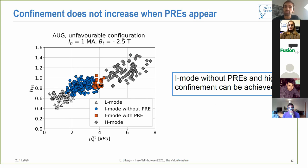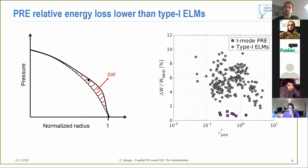Another interesting thing to look at is the confinement during these events. This is the energy confinement time normalized by scaling law and as you can see basically when these events appear you are not increasing your confinement. So this means we can have I-mode plasmas without PREs and with high confinement as well.